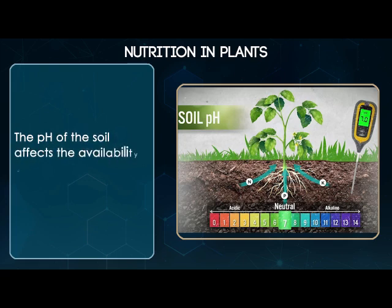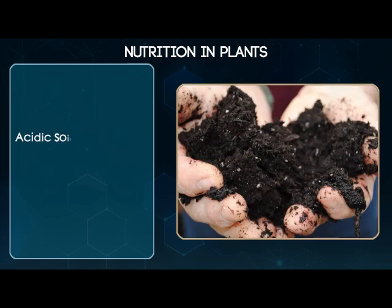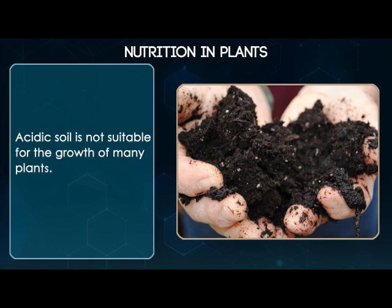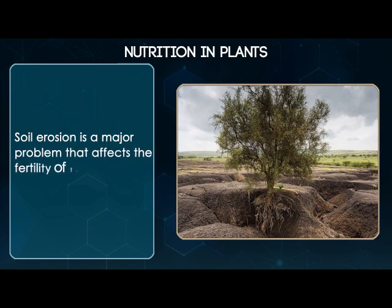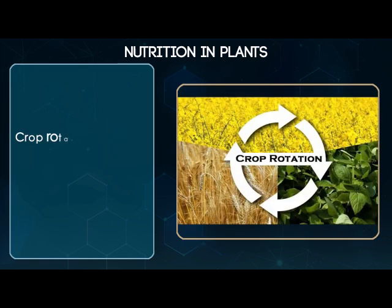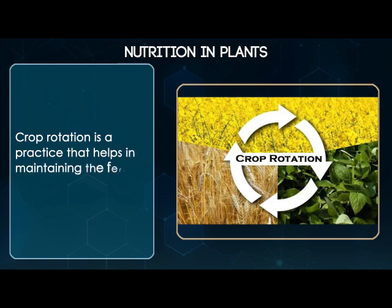The pH of the soil affects the availability of nutrients to the plants. Acidic soil is not suitable for the growth of many plants. Soil erosion is a major problem that affects the fertility of the soil. Crop rotation is a practice that helps in maintaining the fertility of the soil.